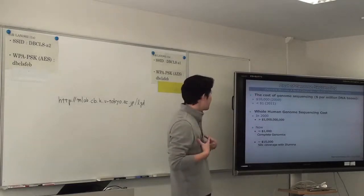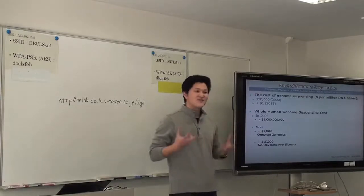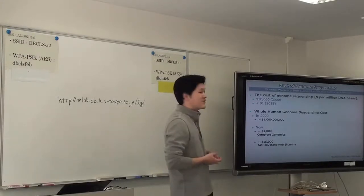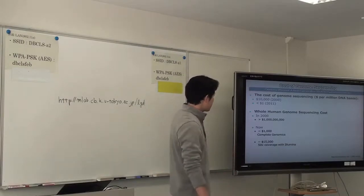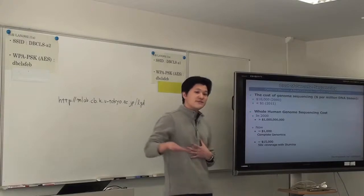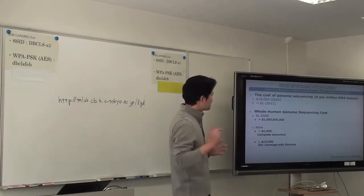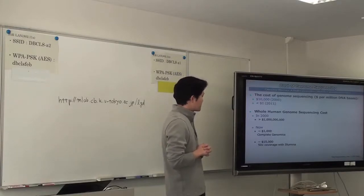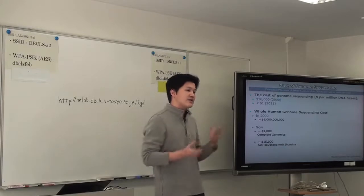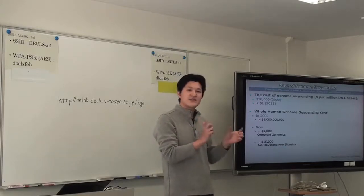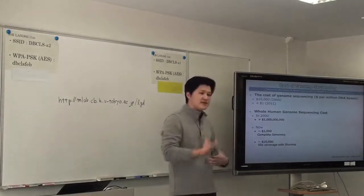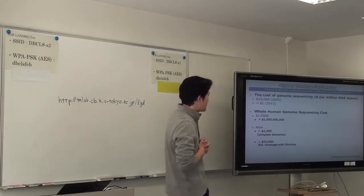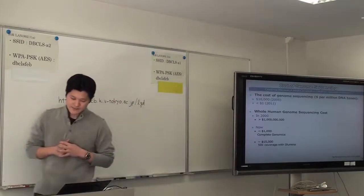For the whole human genome sequences, the Human Genome Project in 2000 spent more than one billion dollars to decipher genome sequences. But now, using an Illumina genome sequencer, we probably need 50x coverage to detect SNPs, and this cost will be around $15,000.